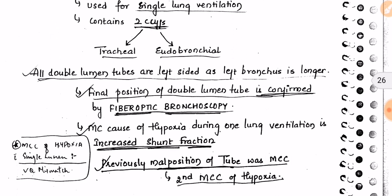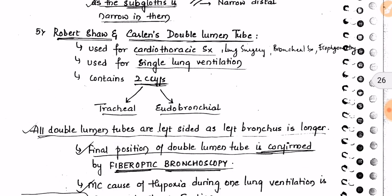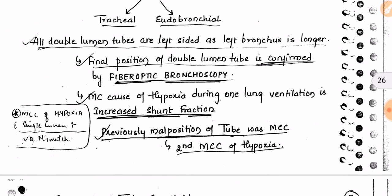All double lumen tubes are left-sided because the left bronchus is longer. The final position of the double lumen tube is confirmed by fiberoptic bronchoscopy. The most common cause of hypoxia during one-lung ventilation is increased shunt fraction.